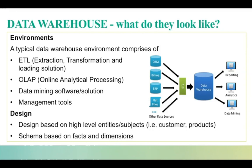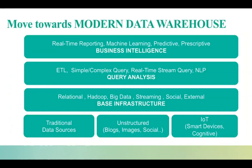Traditional data warehouses worked well over the years, but with the advent of new forms of data that are primarily unstructured — like financial reports, blogs, Twitter, social media — and various integration channels like data from IoT devices, behavioral data from cognitive apps, and the move toward cloud for better scalability and cost options, we need to look at a new modern data warehouse that holistically addresses these disparate data sources and channels to provide intelligent insights.